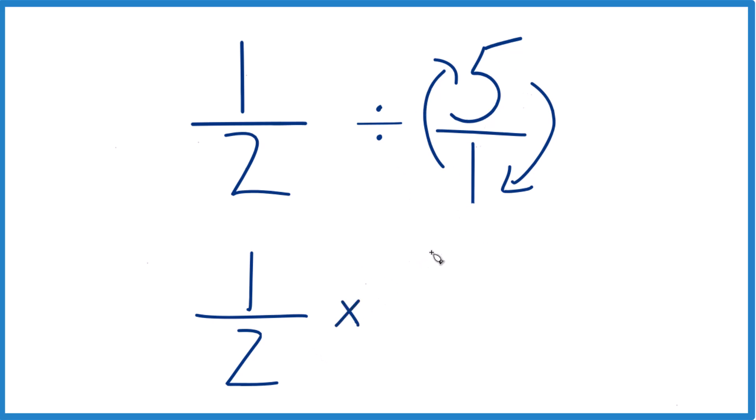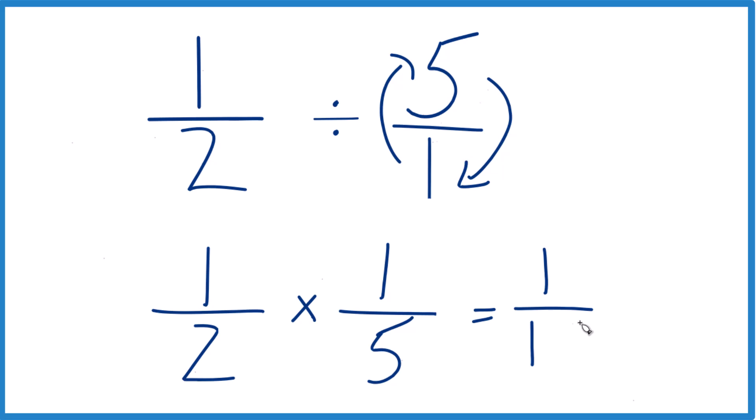So, we have 1 over 5 here. And now, with fractions, when you multiply, multiply the numerators. 1 times 1 is 1, and the denominators. 2 times 5, that's 10.